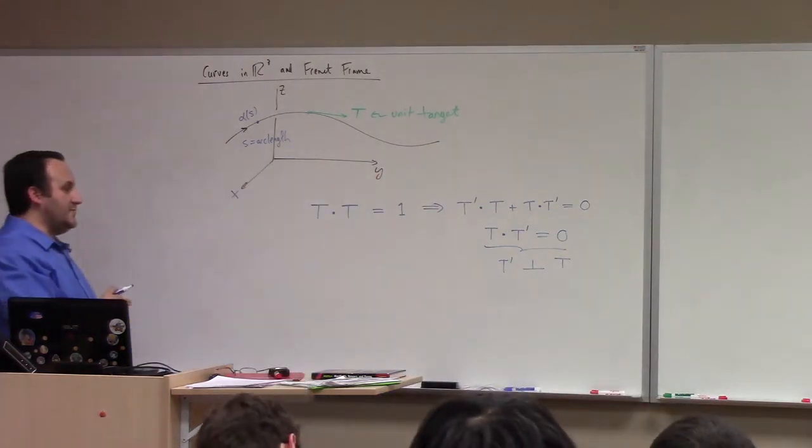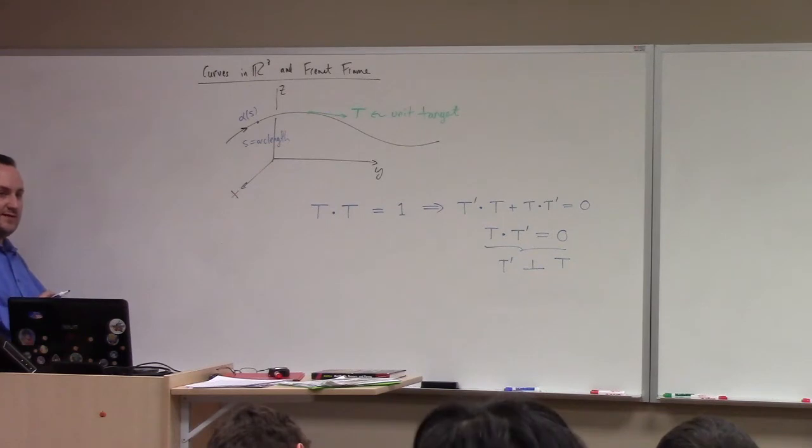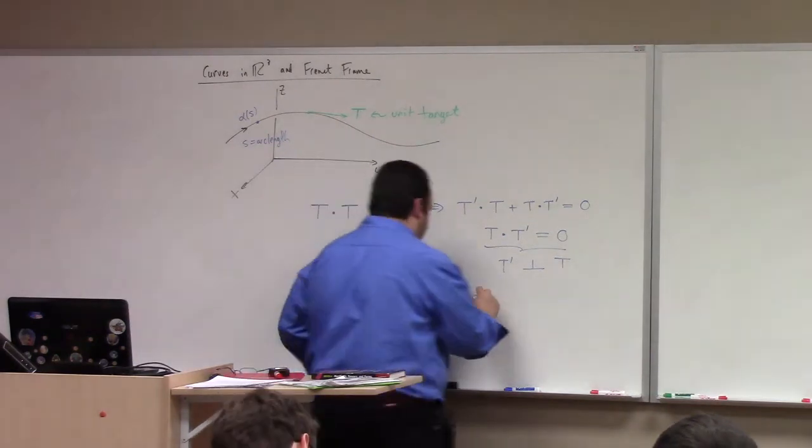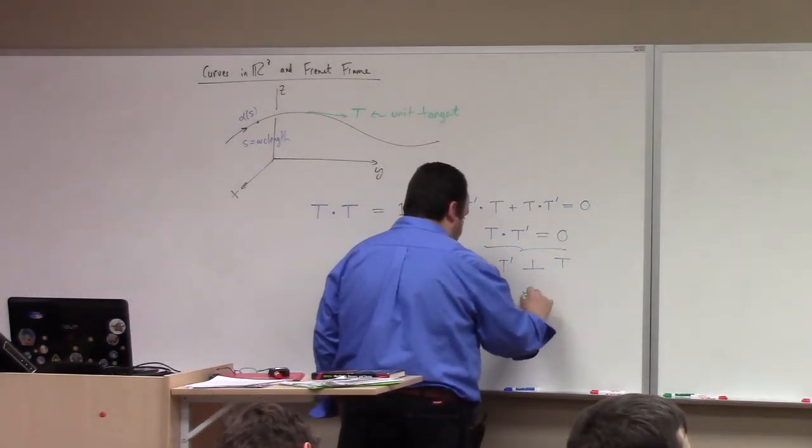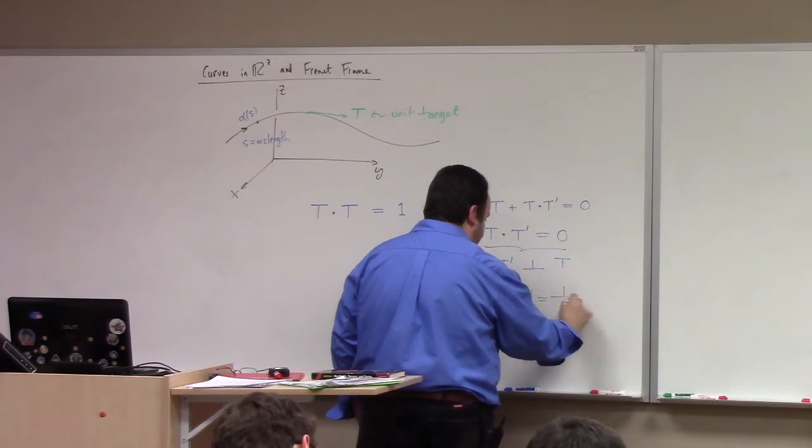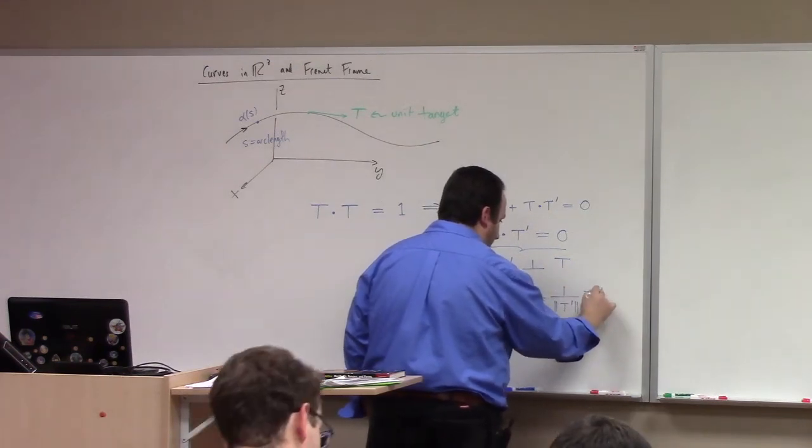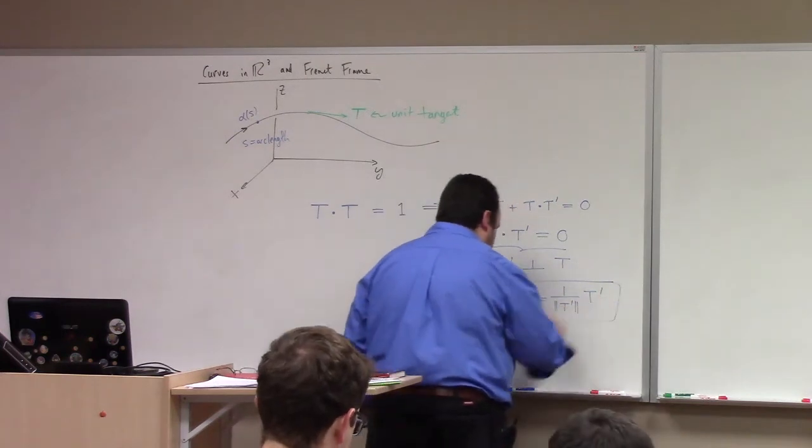But, you can see, then, that the derivative of T, if it's non-zero, right? Well, I suppose even if T prime is zero, then it's still perpendicular. But, certainly T prime dot T is zero. So, this suggests that T prime is perpendicular to T, right?